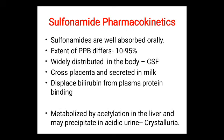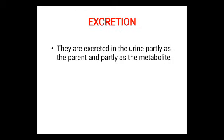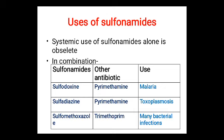Pharmacokinetics of sulfonamides: all are well absorbed orally; the extent of plasma protein binding differs; all are widely distributed in the body. Some enter the CSF, cross the placenta, and are secreted in milk. Sulfonamides displace bilirubin from plasma protein binding sites. All are metabolized by acetylation in the liver and may precipitate in acidic urine, causing crystalluria. All are excreted in urine partly as parent drug and partly as metabolite.